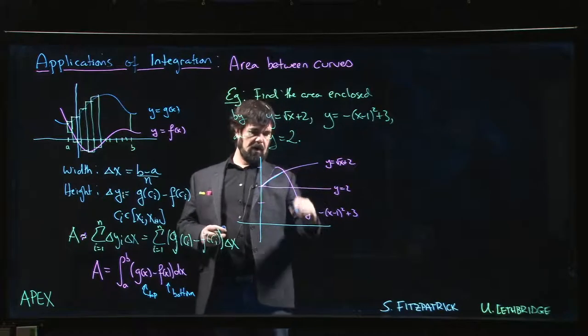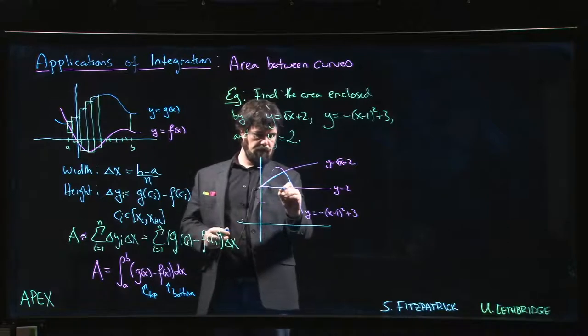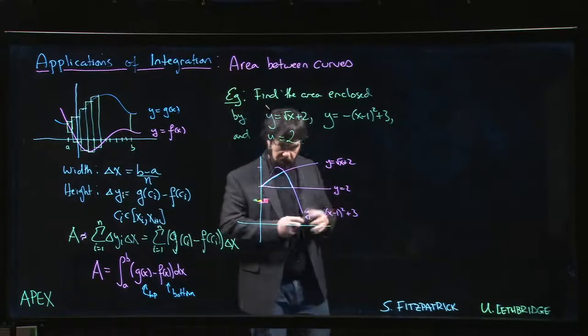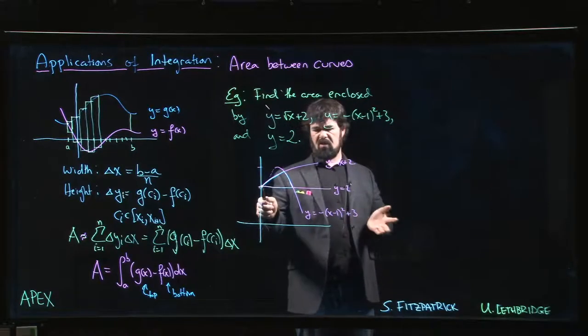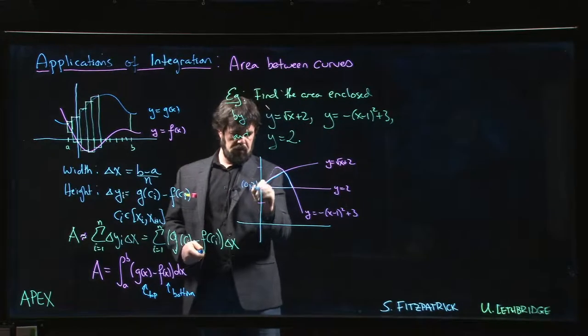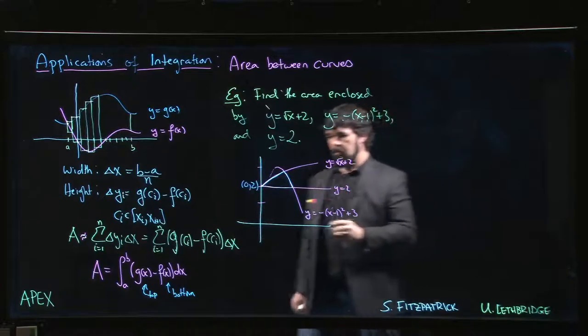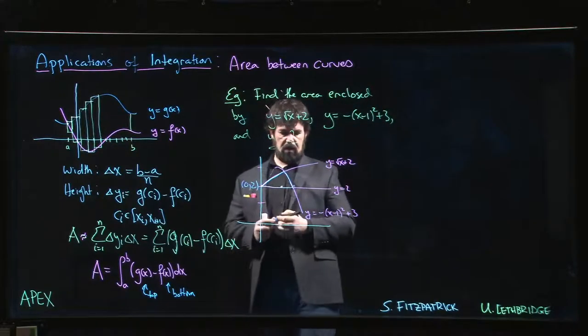We have this parabola here coming down, and we've got our line going across. This determines the region enclosed by the curves. Now this point of intersection clearly is at (0,2). That's clear from the graph. There's two other points of intersection that we've got to nail down here.